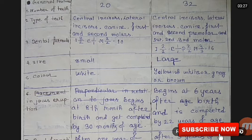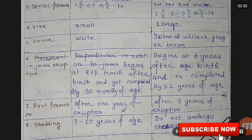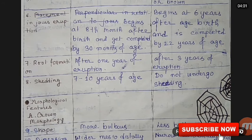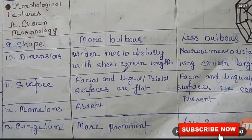Permanent teeth eruption is completed by 22 years of age. Root formation: in deciduous teeth the root is formed after one year of eruption, whereas in permanent teeth the root is formed after three years of eruption. Shedding refers to the loss of deciduous teeth; shedding occurs from 7 to 10 years of age. Permanent teeth do not undergo shedding.